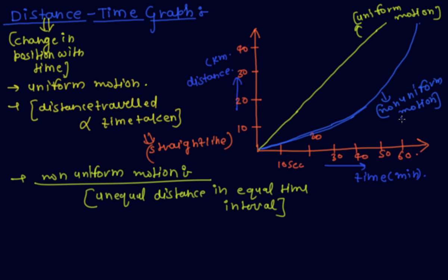In non-uniform motion, speed is variable or velocity is variable. In uniform motion, speed is constant or velocity is constant.